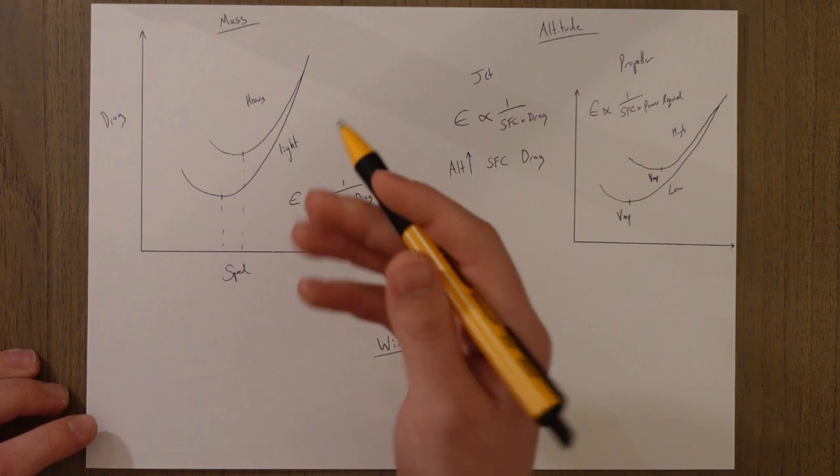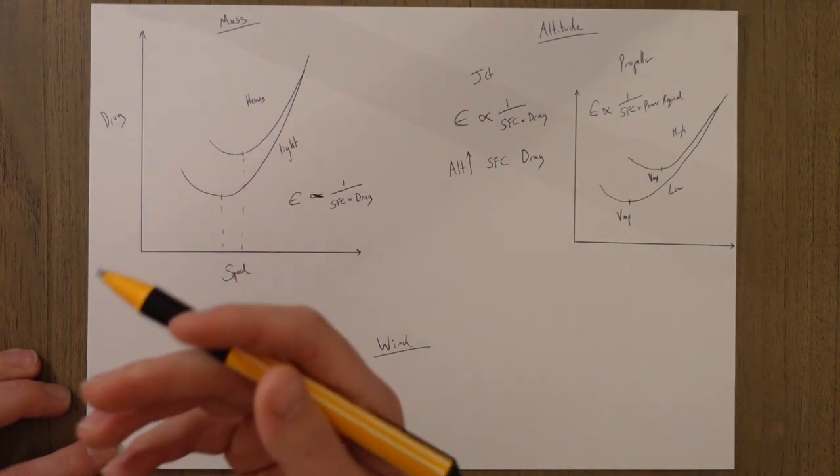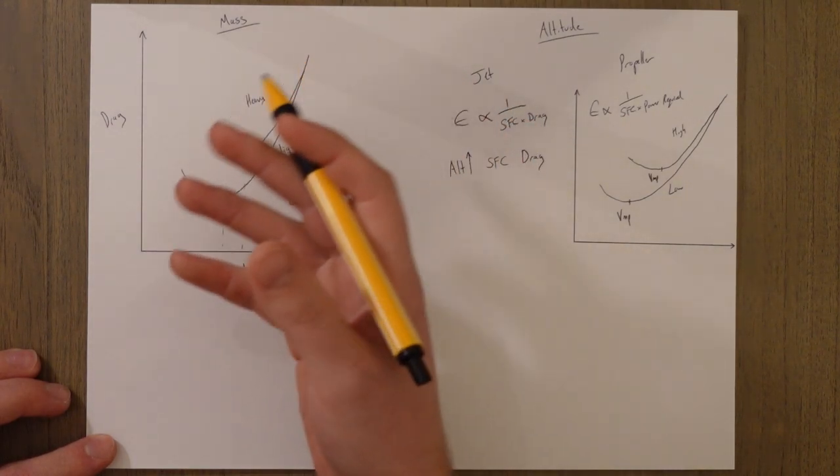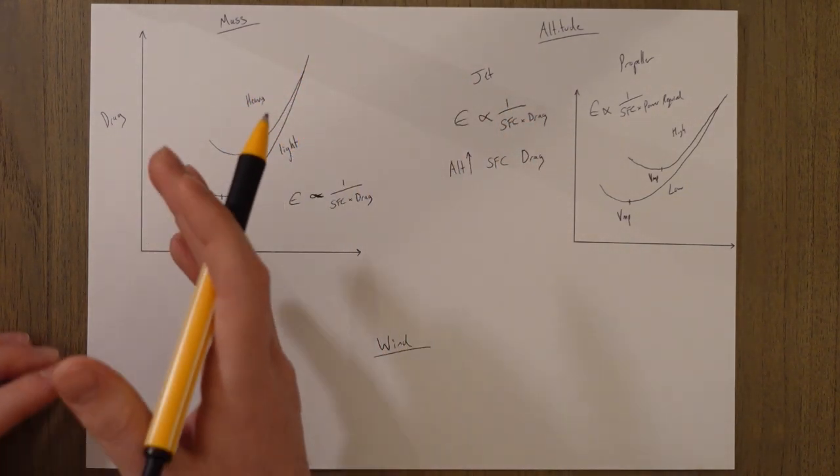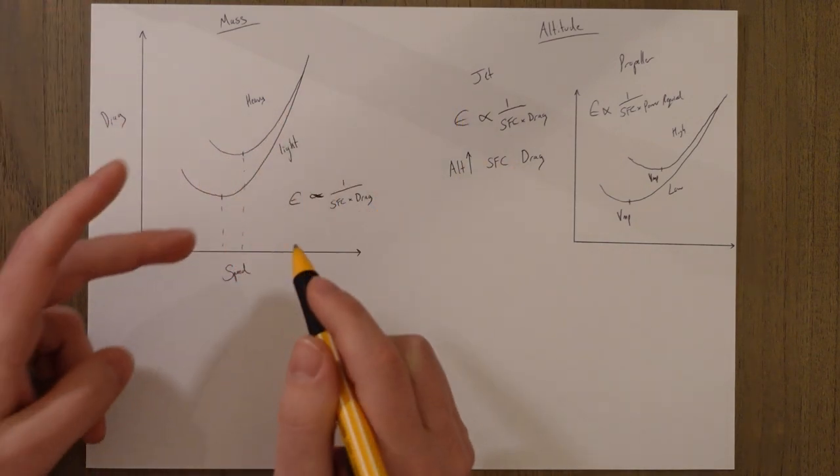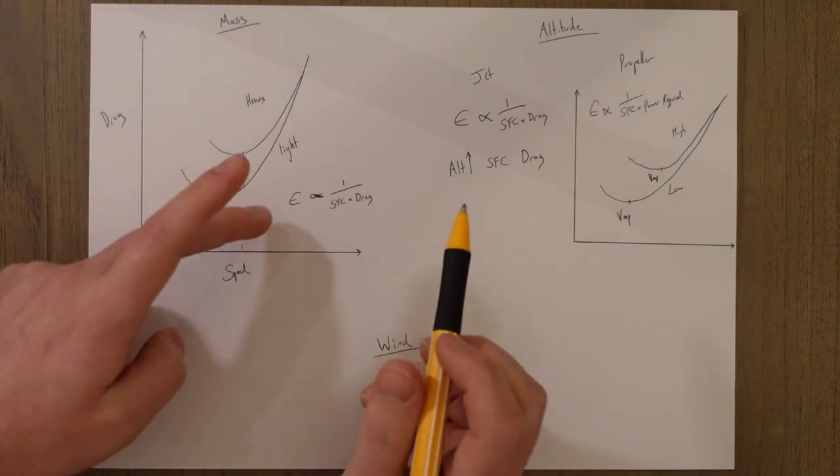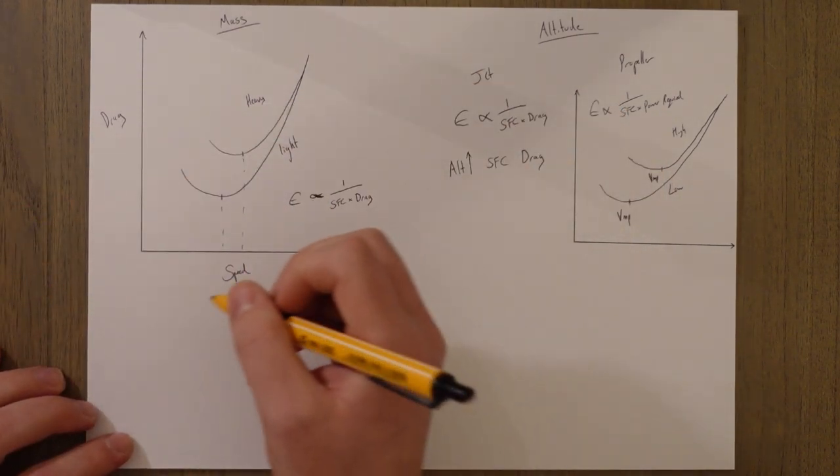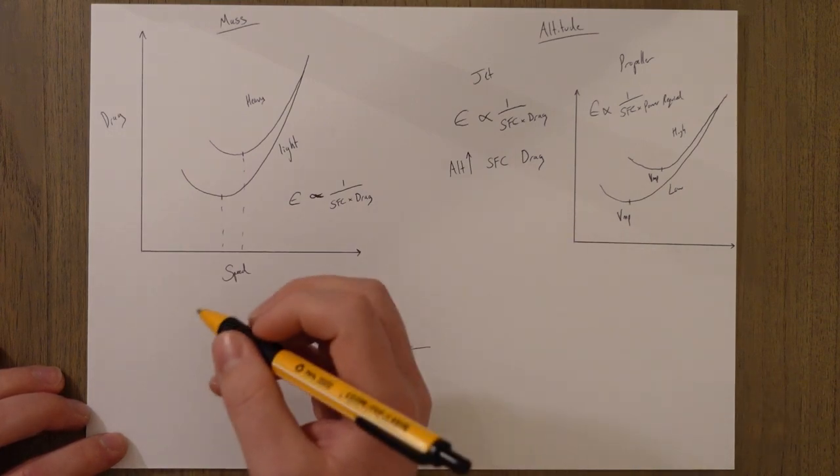For any mass changes there's a cool estimation trick we can use for the questions and if we're flying at the correct speed, if we're flying at Vmd or Vmp, because at that point the variations are proportional. Basically it's new over old equals new over old.